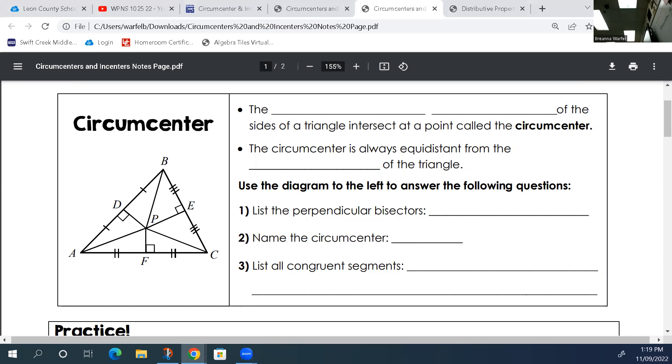The bisector part means that that point right there is going to split it in half. To create a perpendicular bisector, you have to take the side, split it in half right in the middle, and create a 90 degree angle. If you do this on every single side and create that perpendicular bisector for every single side, the point where they meet is considered the circumcenter.